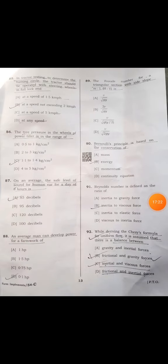Eighty-fourth: cage wheels are used to increase the traction in wetland. B is correct. Eighty-fifth: in tractor testing to determine turning circle, the tractor should operate with steering wheel in full lock at speed not exceeding 2 kilometer per hour.